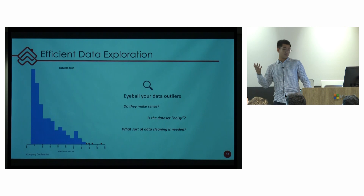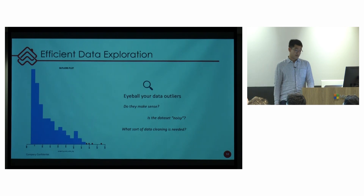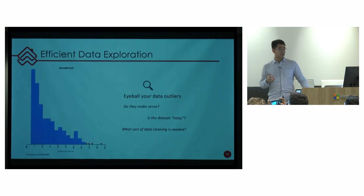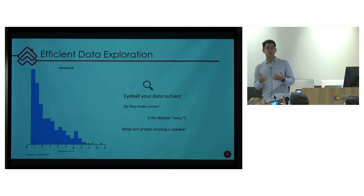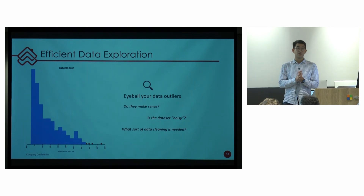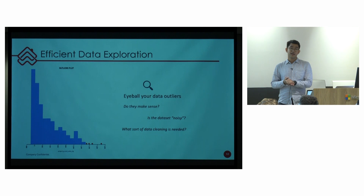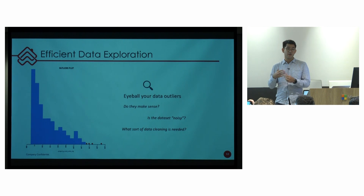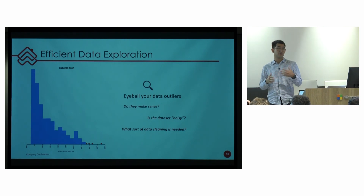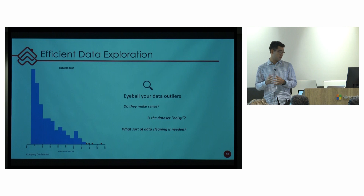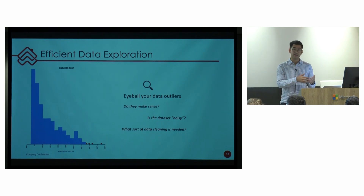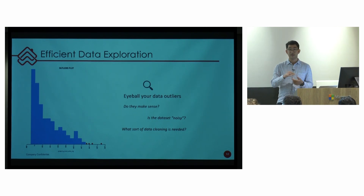Another thing Joe already talked about is outlier detection. These two plots are something we use to get the initial sense of data — whether it is correct, or which way you should modify our pipeline and data collection pipeline to better suit modeling.